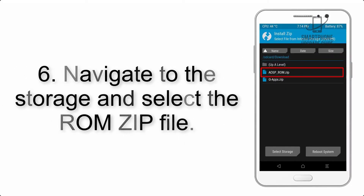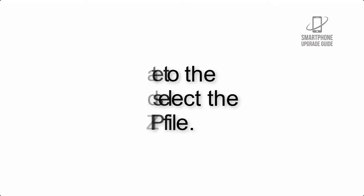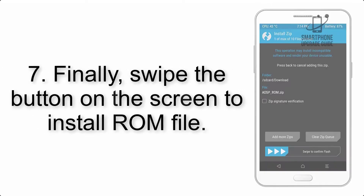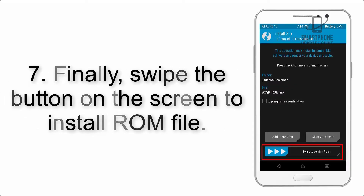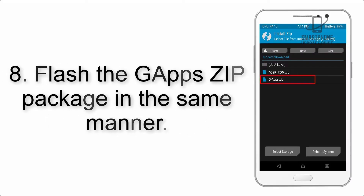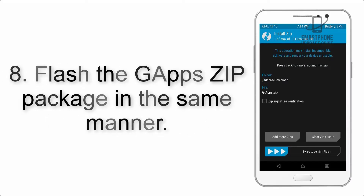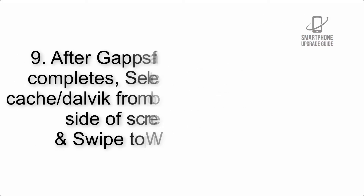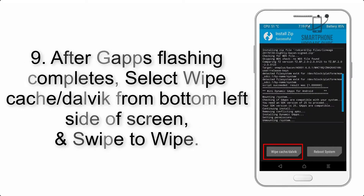Step 6: Navigate to the storage and select the ROM zip file. Step 7: Finally, swipe the button on the screen to install the ROM file. Step 8: Flash the GApps zip package in the same manner.